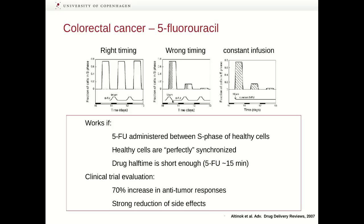If we have wrong timing where some of the 5-fluorouracil injection coincides with the period where healthy cells are in S phase, the amount of cells drops because healthy cells simply die. With constant infusion of 5-fluorouracil, you see the same thing — you will always hit some healthy cells that are in S phase, but not to the same extent as in the wrong timing situation.